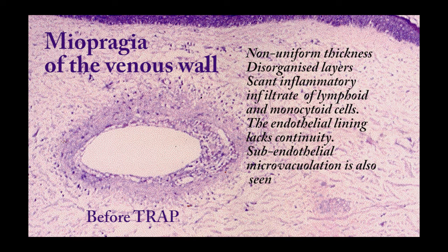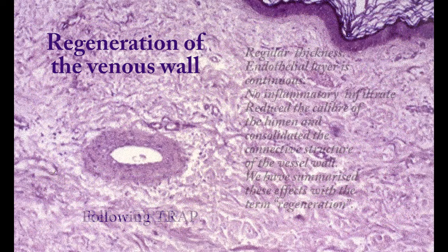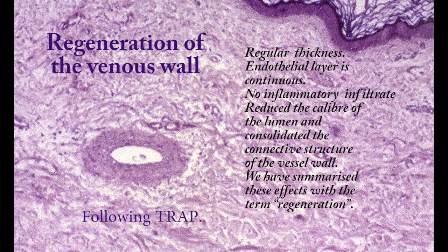Varicose disease has a biological cause and an anatomical cause. The biological cause is the congenital myopragia of the walls of the vessels of the superficial and perforating circulation. The deep veins and the saphena are better protected by the robust sheaths that envelop them.